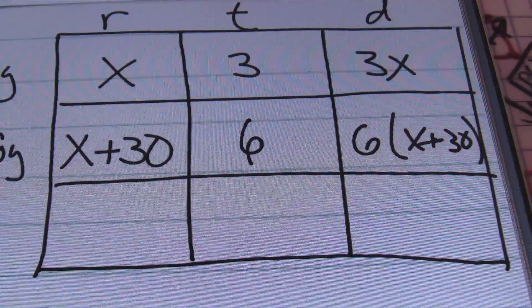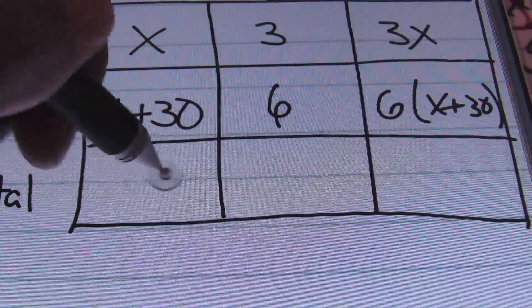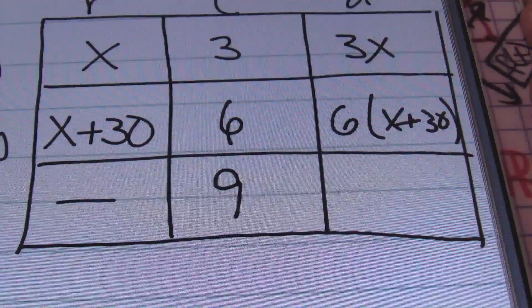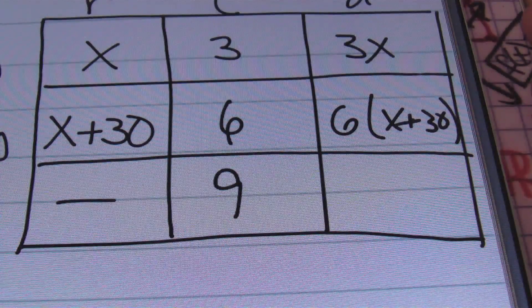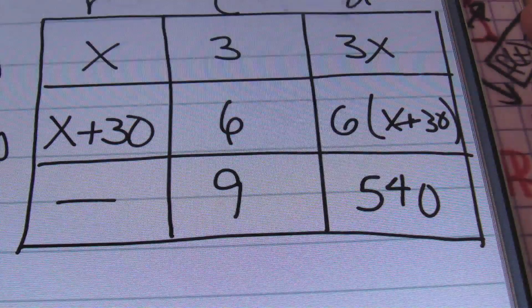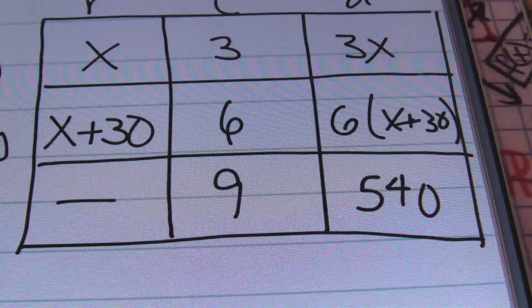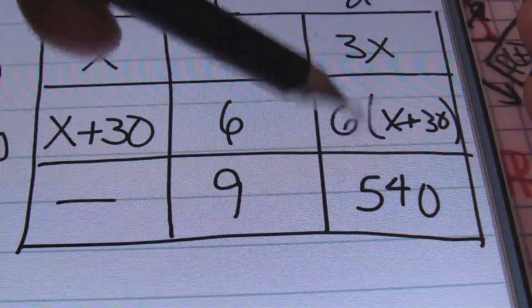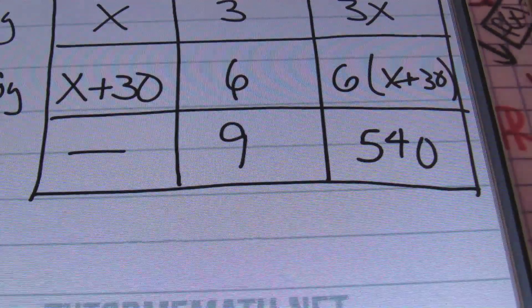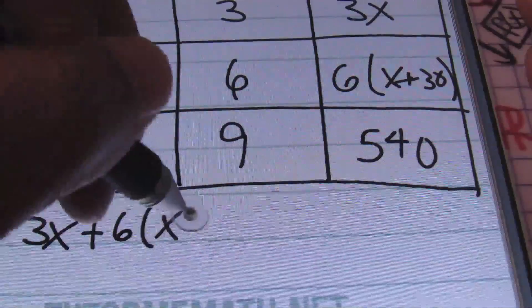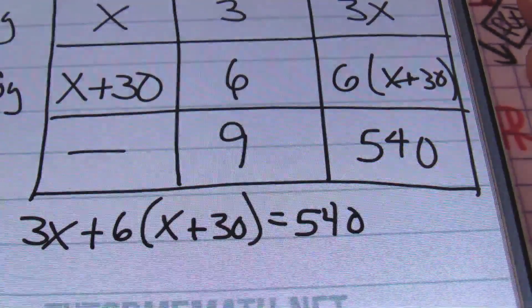To find the distance column, multiply rate times time. That gives us X times 3, which is 3X, for the fog row. Then multiplying X plus 30 times 6 gives us 6 times (X plus 30). We don't need a total rate, but our total time is 9 and total distance is 540 miles. The distance column gives us our equation: 3X plus 6(X plus 30) equals 540.